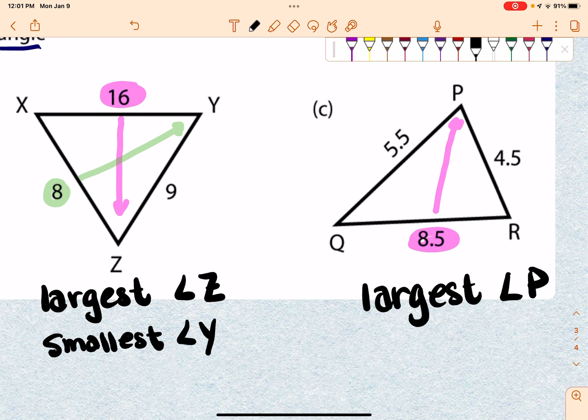And if I look at this one, the smallest side over here is 4.5, and Q is across from that. So the smallest angle is going to be angle Q.